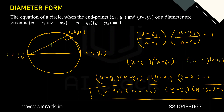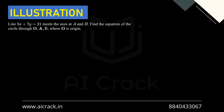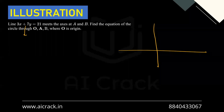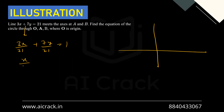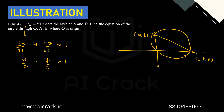This is the diameter form of the equation of a circle. If you are given the two endpoints of a diameter, just write the equation in this format to get the circle's equation directly. For example: line 3x + 7y = 21 meets the axes at A and B. Writing in intercept form: x/7 + y/3 = 1, so A = (7,0) and B = (0,3).